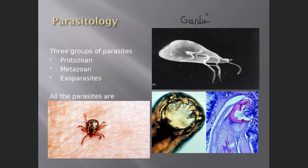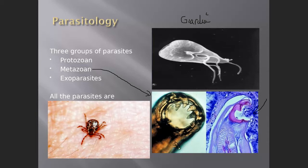Metazoans are the worms — this is a hookworm. You can see it has structures similar to teeth that it can use to attach to the mucosal layers and structures of the body when infecting it. The metazoans have three groups. Then we have the exoparasites — exo means on the outside. They cause an infestation, not a true infection, because they're on the outside of the body, taking nutrients or blood from us.